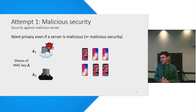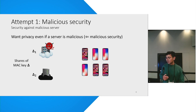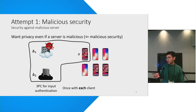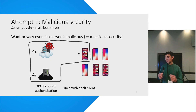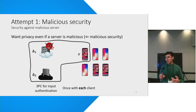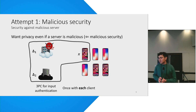The way that works is that there will be a MAC key — no one knows the MAC key, but each server has one share of the MAC key. The servers will start a 3PC protocol with each client, and the output of that would be authenticated shares of the client's input. This happens once with each client, and once they have the authenticated shares, they can do the 2PC. So this solves the problem — we have malicious privacy, but obviously there are some caveats.